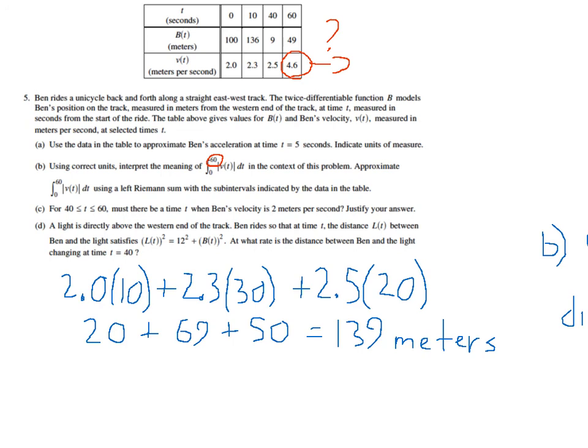And we used, again, the 2.0, the 2.3, and the 2.5 because we were using the left side of each interval because they said use a left Riemann sum. Okay, so that's how we would do parts A and B. I'm going to make a separate video for parts C and D to make sure I fit the YouTube time allotment. So that's parts A and B of question number 5 from the AP Calculus AB Form B Examination from 2011.